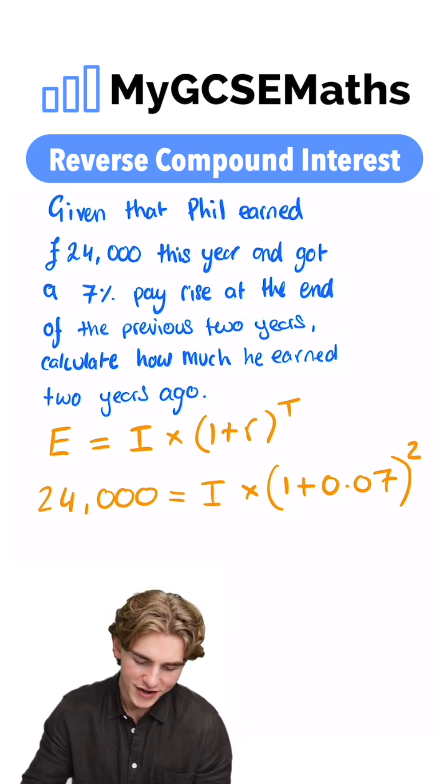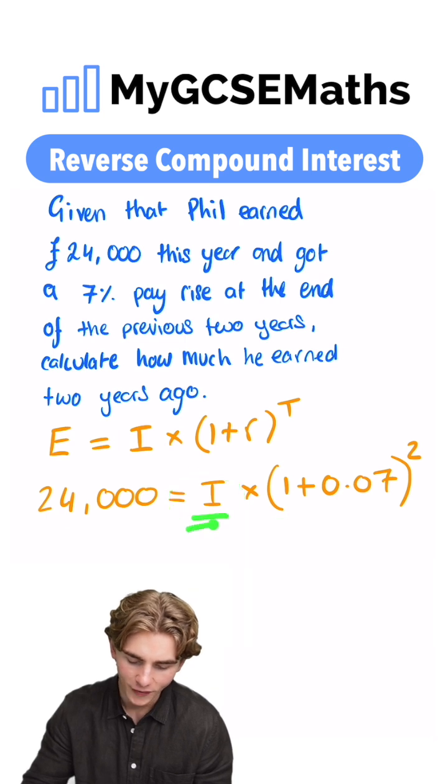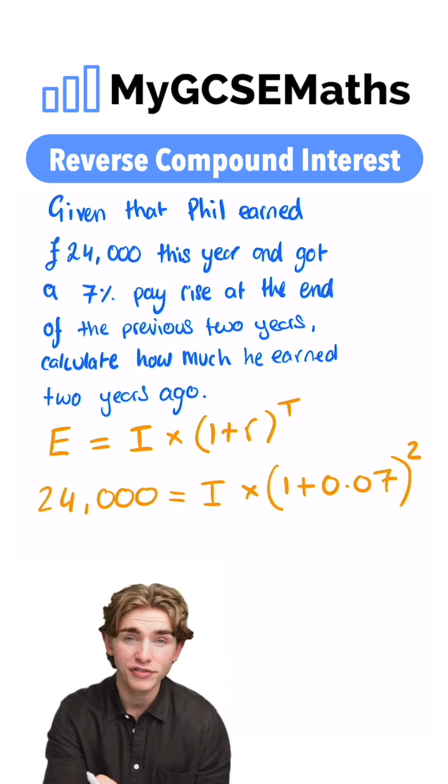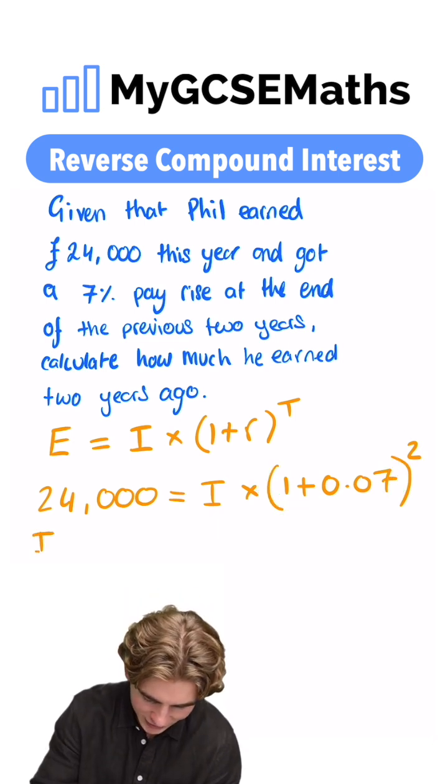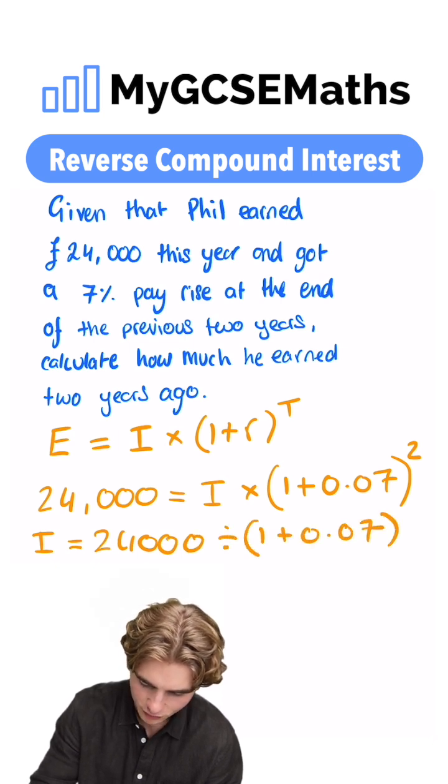Now we can see that we have an equation which we can solve to find I. At the moment our initial amount is being multiplied by one plus 0.07 squared. So we're going to divide both sides by that. We're going to have I equals 24,000 divided by one plus 0.07 raised to the power of two,